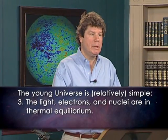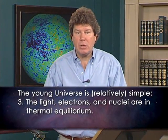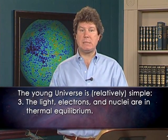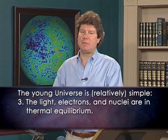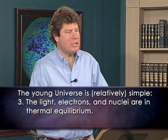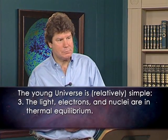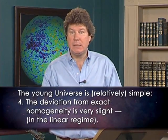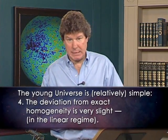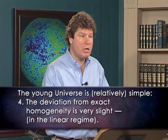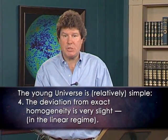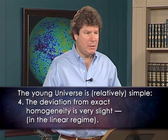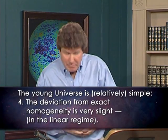Third, in addition to being tied together in a single fog, the light, electrons and nuclei are also in thermal equilibrium. And to a physicist, this is the simplest kind of situation one could have — the kind that undergraduate textbooks routinely deal with. Finally, the deviation from exact homogeneity — the lumpiness — is very slight. And the physics of how slight lumpiness grows during the expansion is relatively straightforward. Physicists say the situation is in the linear regime, which means it yields to a particularly simple mathematical treatment.